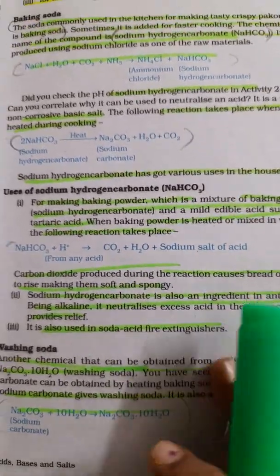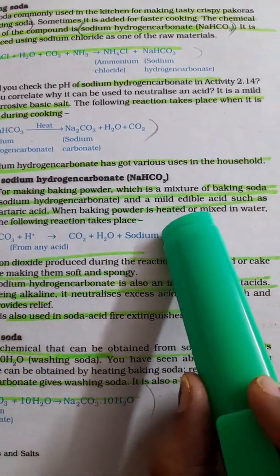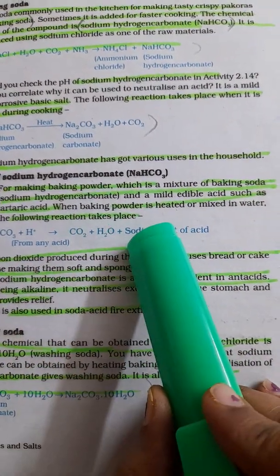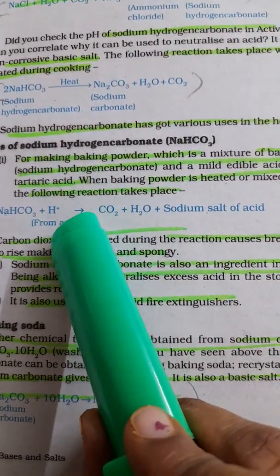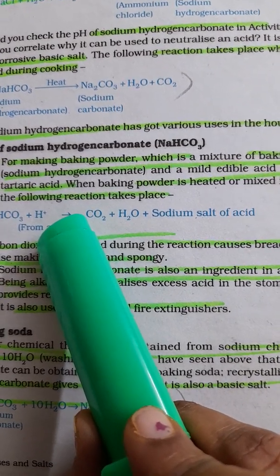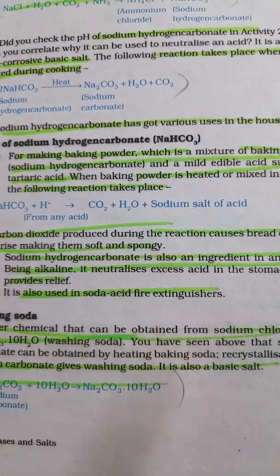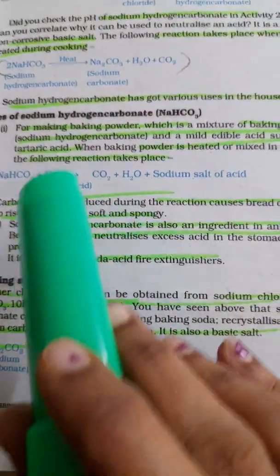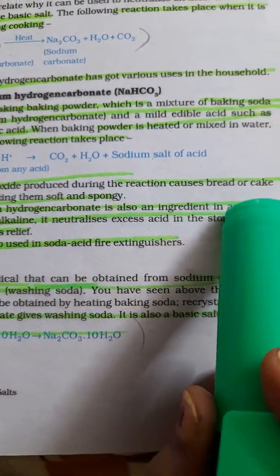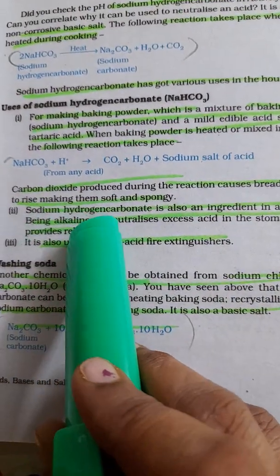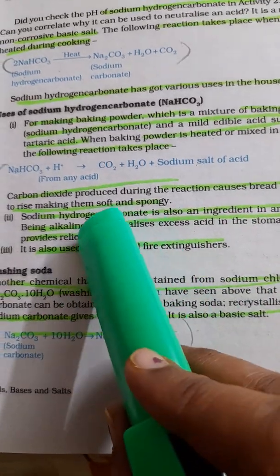There are many uses of baking soda. For making baking powder, it is a mixture of baking soda — sodium hydrogen carbonate — and a mild edible acid like tartaric acid. When you heat baking powder or mix it with water, NaHCO3 reacts with H+ ions (all acids contain H+) and releases CO2, H2O, and the sodium salt of the acid. The carbon dioxide produced causes bread or cake to rise, because CO2 is a gas that rises up and makes the texture of bread soft and spongy.